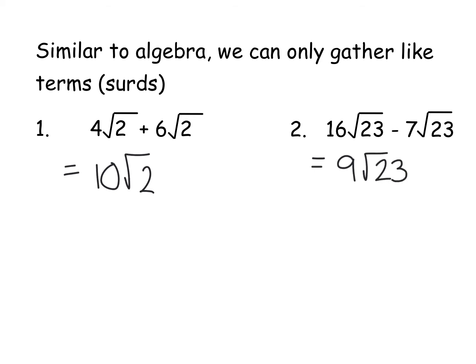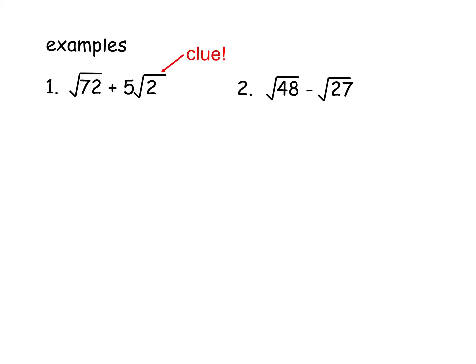So we are looking to get surds of the similar term. Now they're not presented like this, this is how they appear in the exam. So my first one is √72 plus 5√2, and I've said that there's a clue here. 9 times out of 10 when I've seen these in an exam, one of them has already been fully simplified. And that's your clue that you're trying to get the other one or the other two sometimes to be in the form √2 as well.